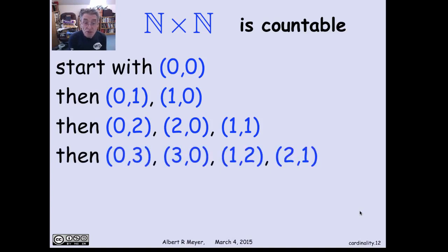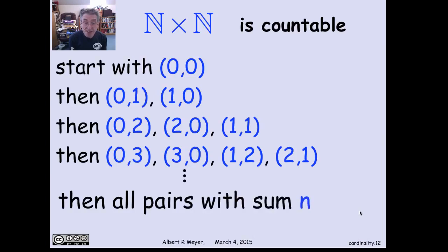And after them, (0,3), (3,0), (1,2), (2,1). And if you can see what I'm doing, I'm basically listing the pairs in the order of the sum of their coordinates. So the nth block of pairs that I'm going to list will be the pairs whose sum of two coordinates is n. There'll be n plus 1 of those.